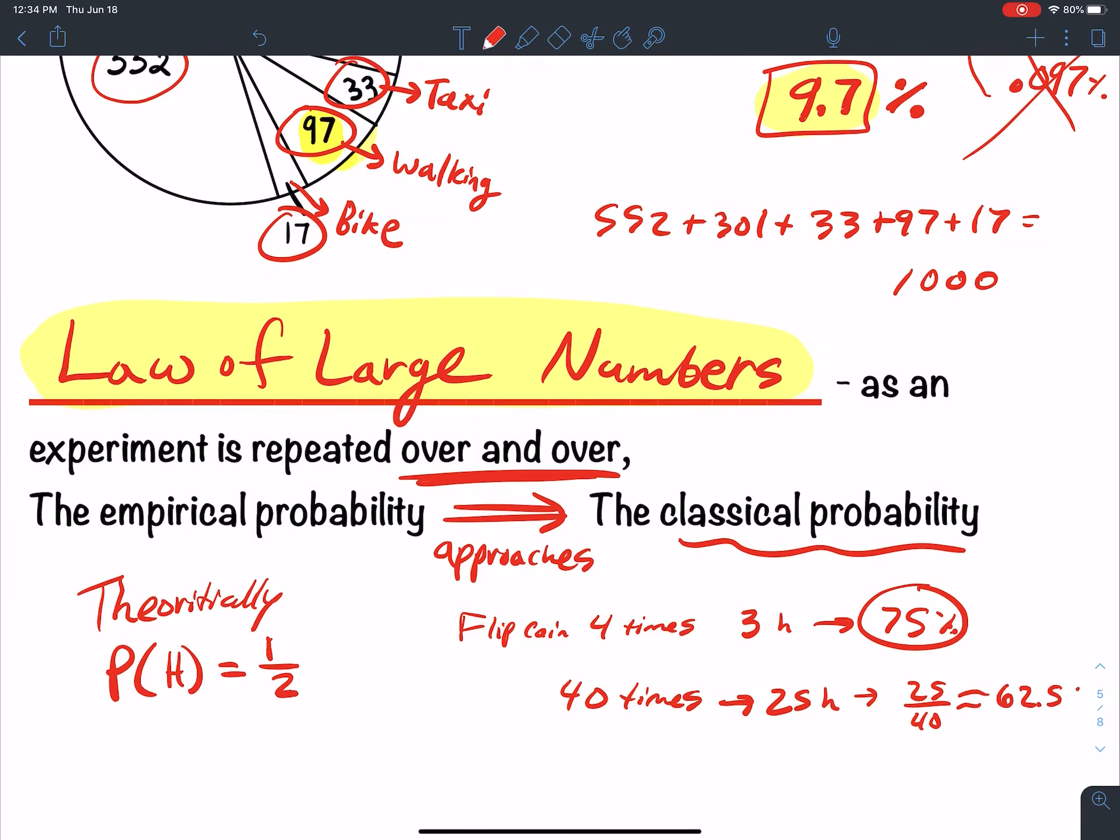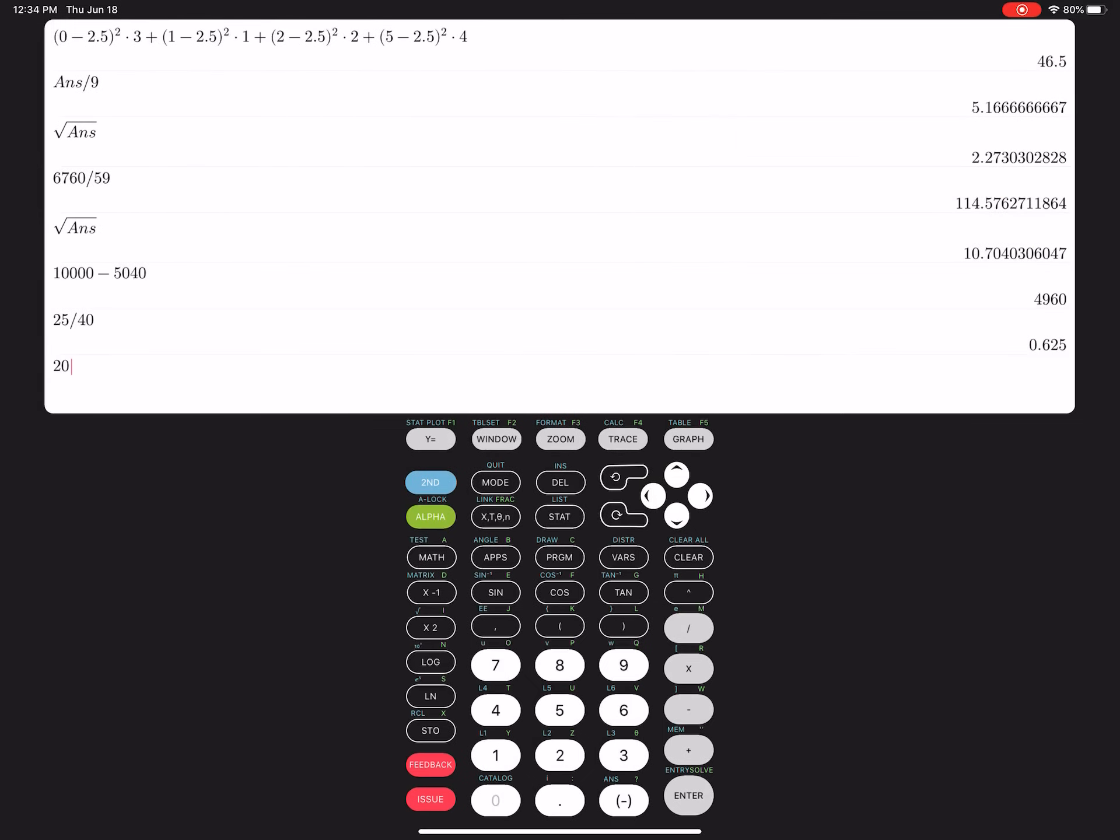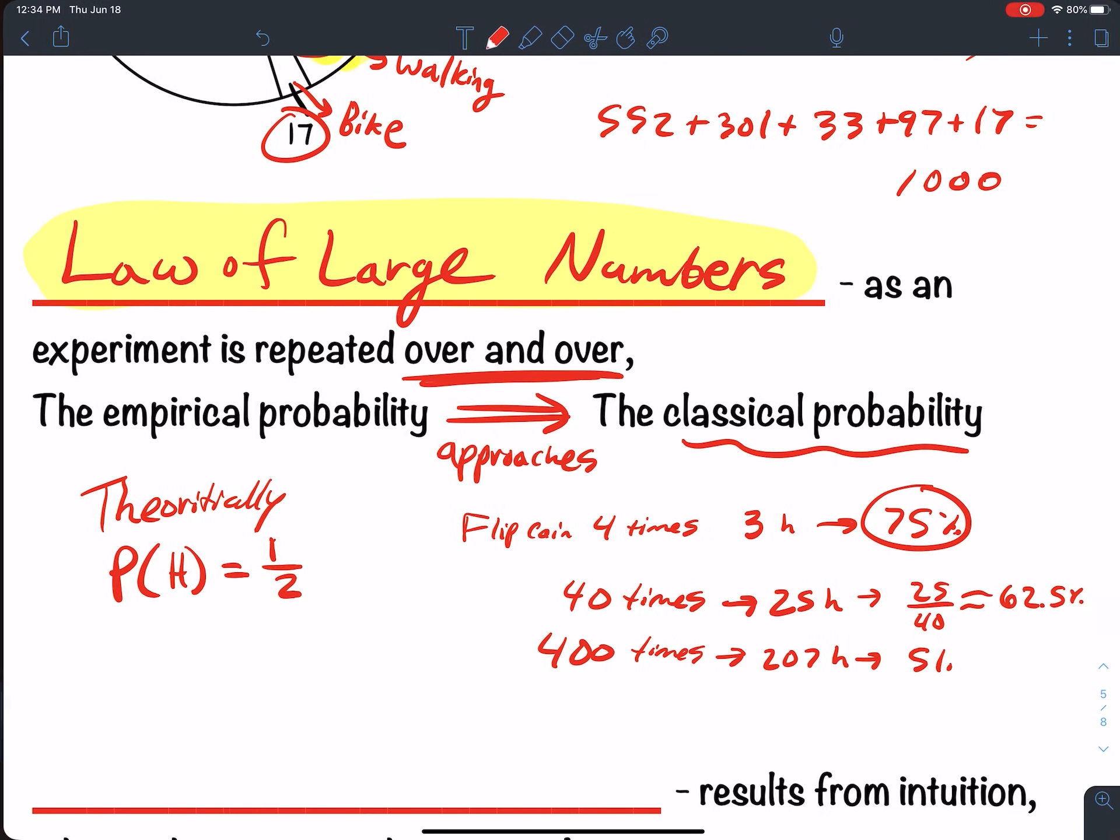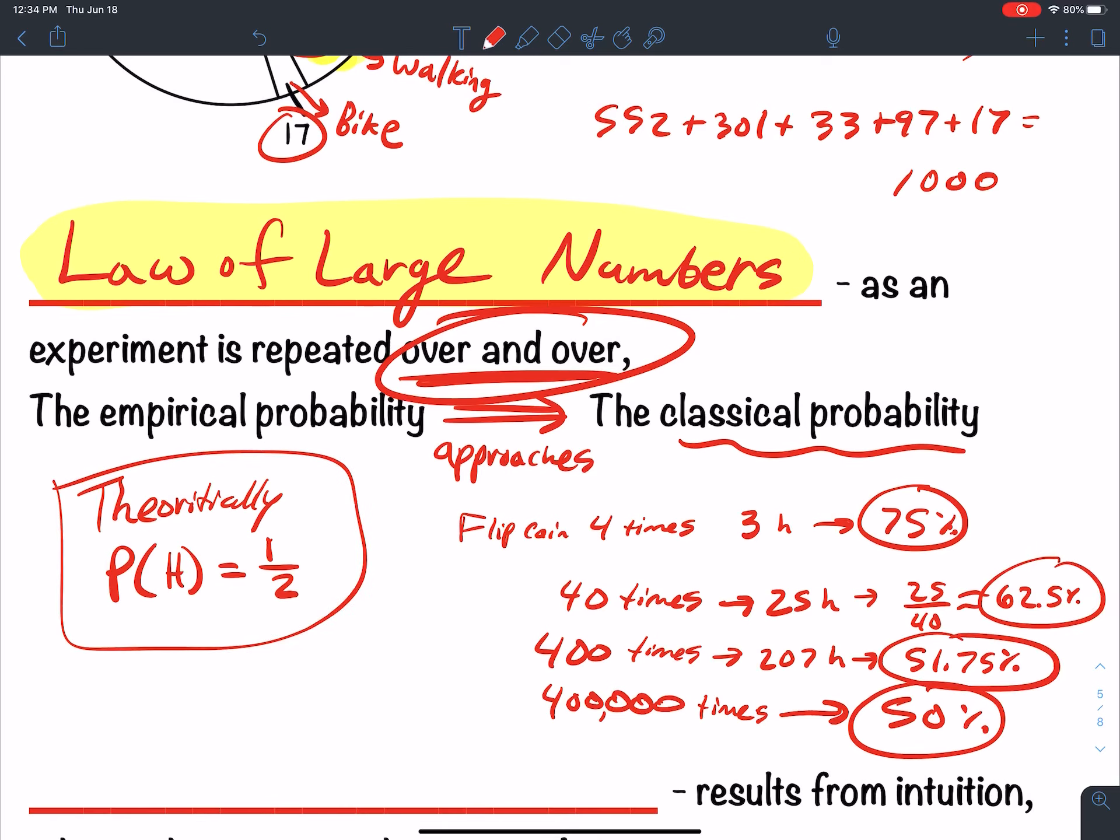So that's like 62.5%. So it's closer to 50%, but then maybe I flip it 400 times, and now I get like 207 heads. And so 207 out of 400, that gives me 51.75%. What's happening? The more times I increase my times I flip the coin, the closer and closer I get to my 50%. So over and over, the more times you do it, the closer and closer we head to the true theoretical 50%. So that's the idea of law of large numbers. Empirical probability converges asymptotically as n goes to infinity, we're approaching this classical probability.